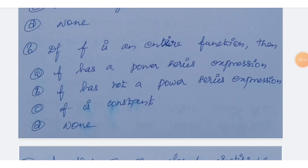Next question: if f is an entire function, then which option is correct? Option A: f has a power series expression. Option B: f does not have a power series expression. Option C: f is a constant. Option D: none of the above.